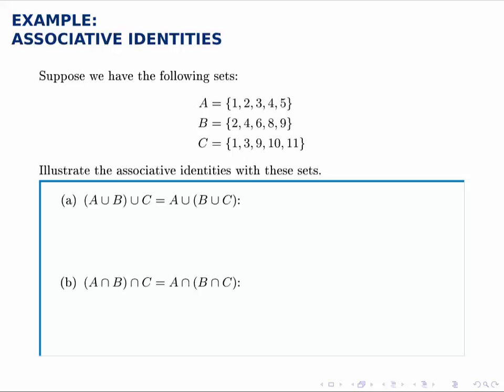Remember the associative identities are the ones we have listed here, where essentially it says if we have the union of three sets or the intersection of three sets, it doesn't matter where we group the two operations. In other words, if we group A union B and then take the union of that answer with C, or if we do B and C first and then take that answer and take the union with A, we'll get the same answer, and the same thing with intersections.